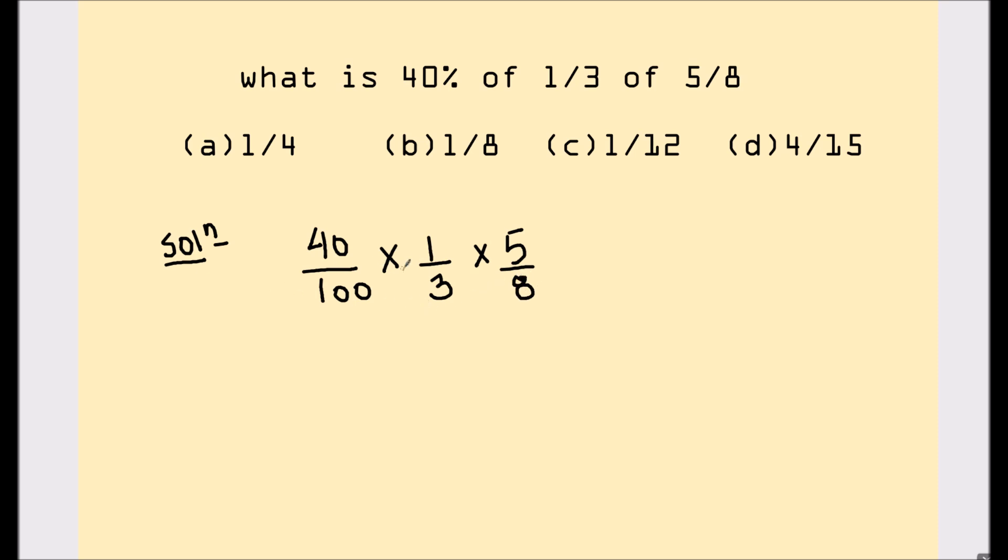Now we are going to solve this. This is 40 times 5 in the numerator, which equals 200. And in the denominator, we have 100 times 3 times 8, which is 24.